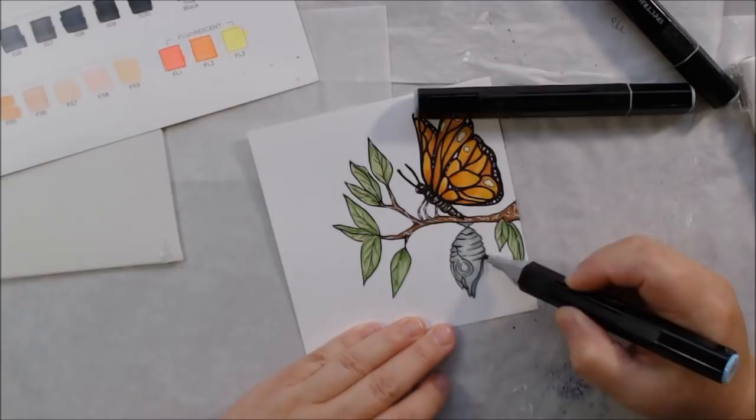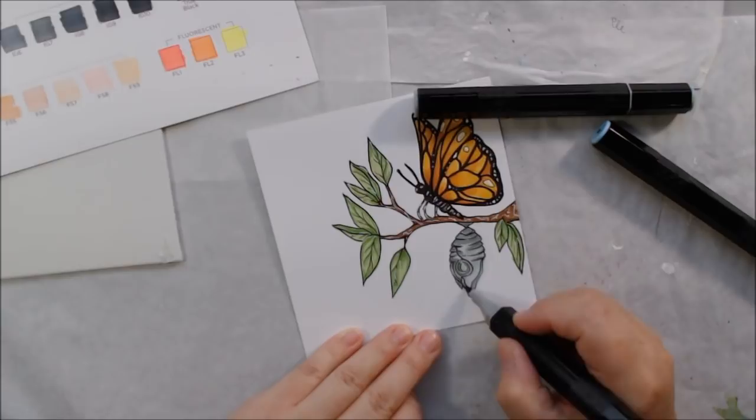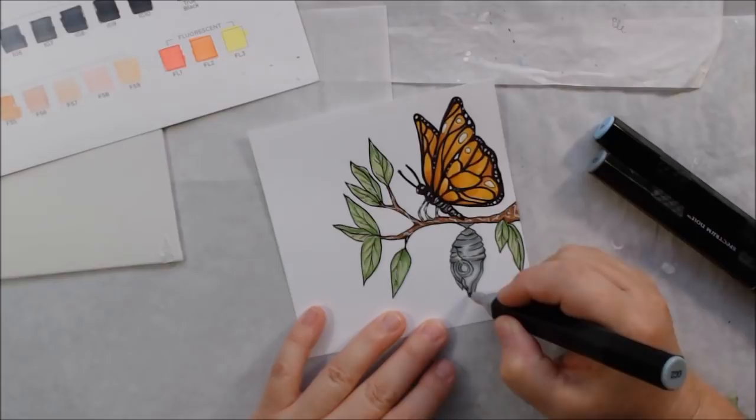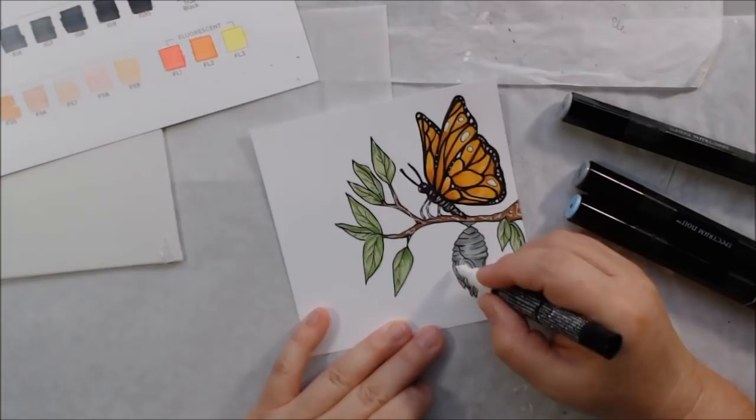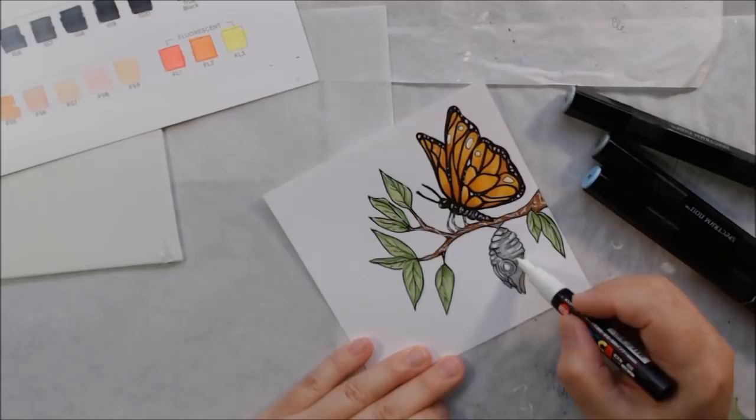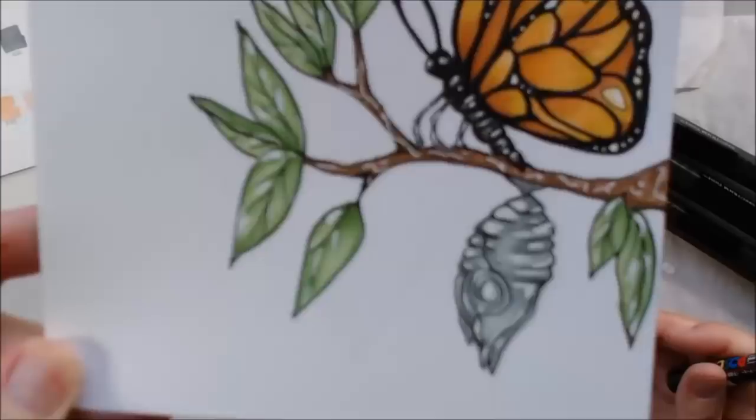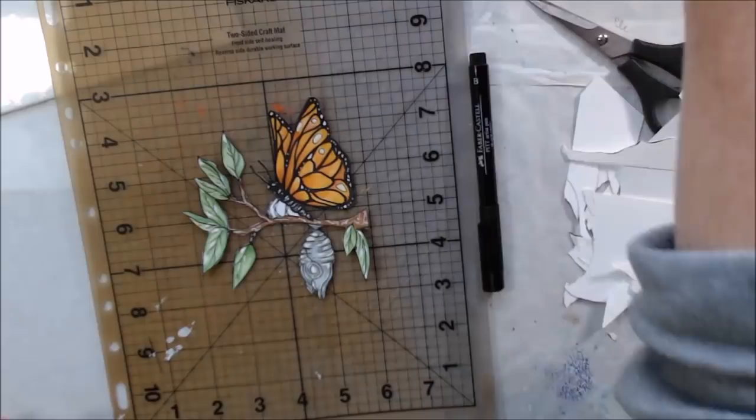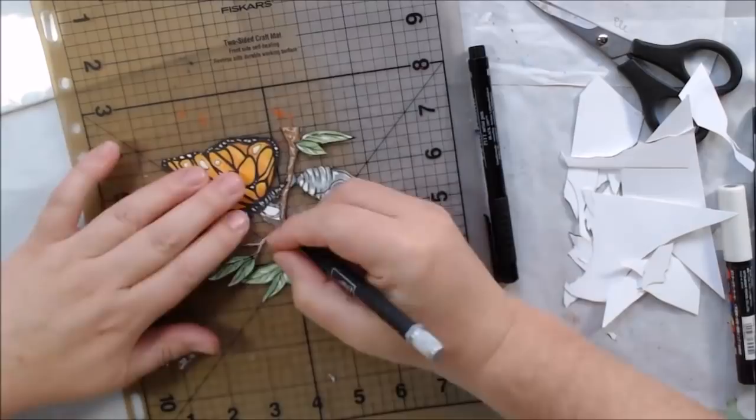The chrysalis is open—you can see the jagged edge at the bottom. That's why I colored it this bluish gray. If the butterfly is still inside, it's a different color. They start out almost light green, then thin out so you can see the butterfly wings inside, and once the butterfly breaks out it's really just a clearish grayish color.